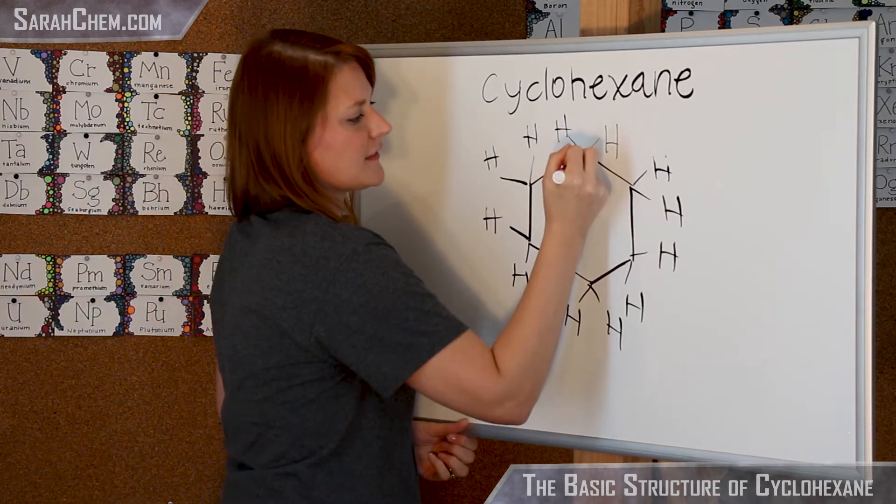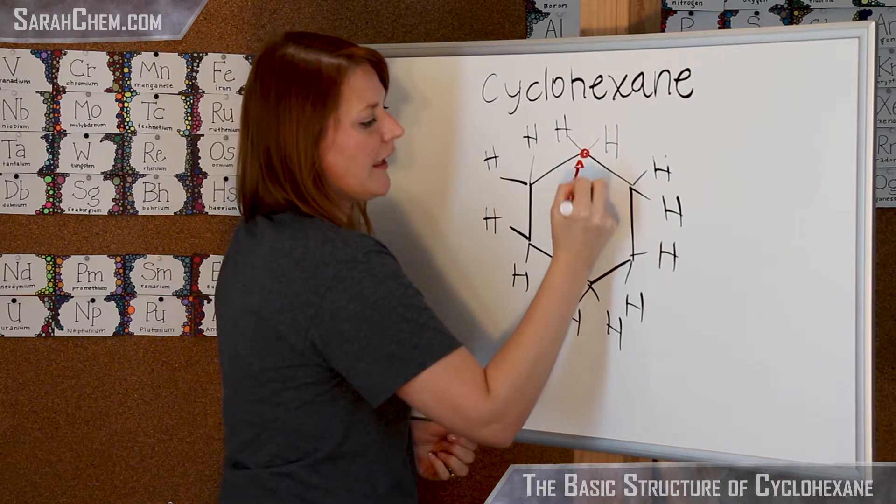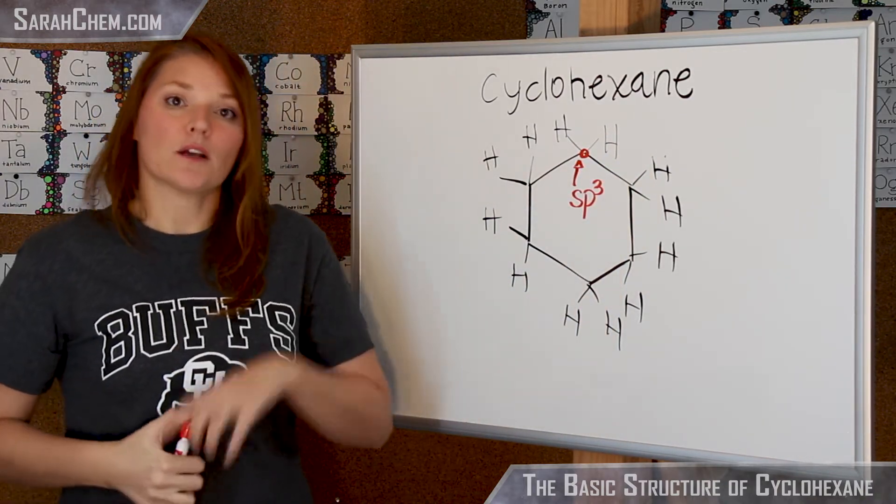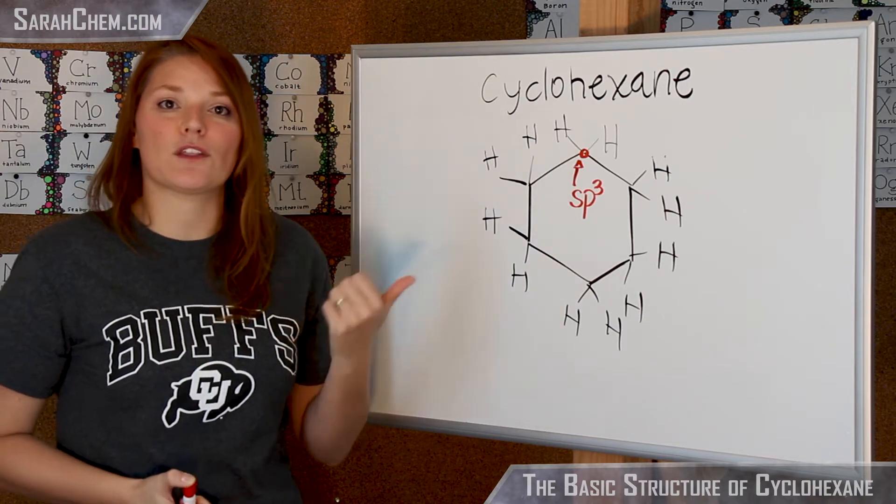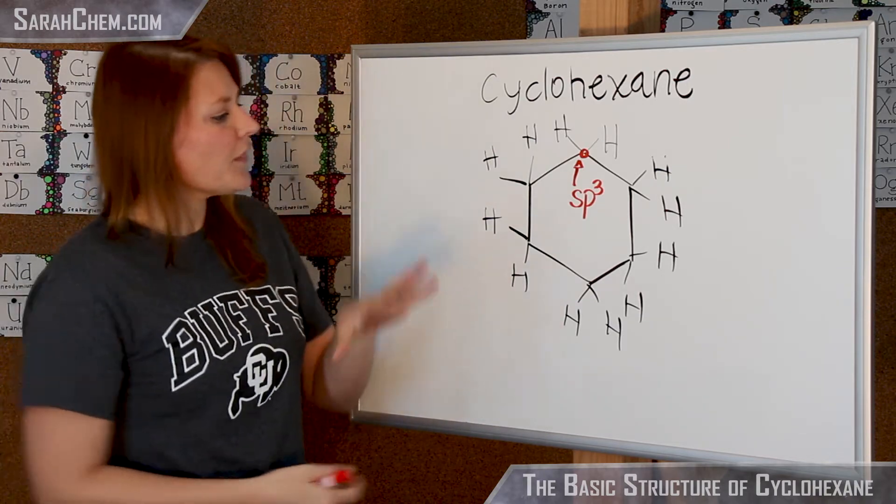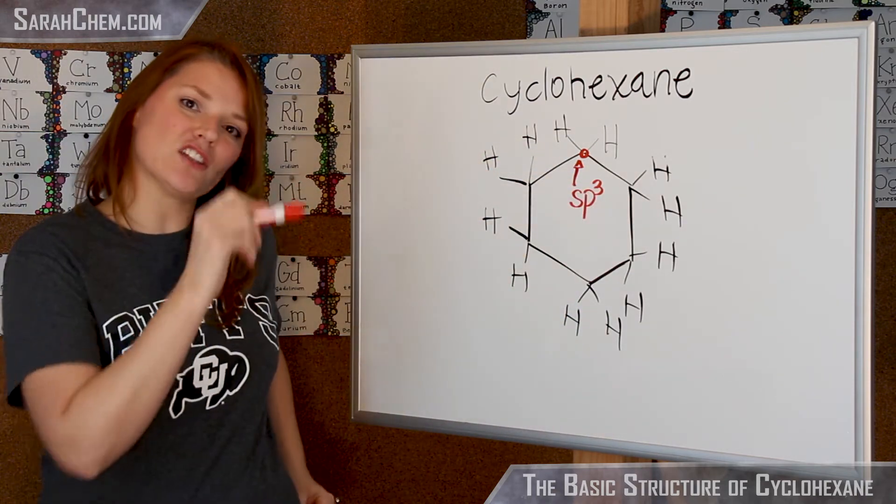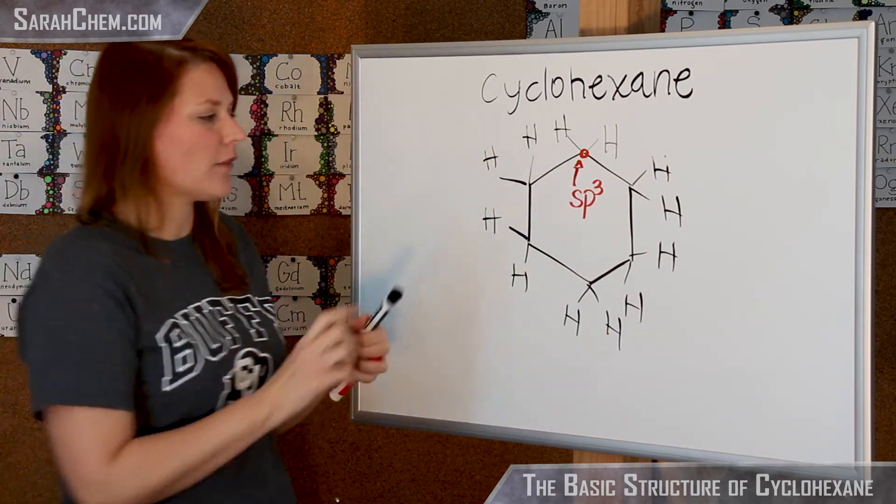One way to convince yourself of that is to take a look at this carbon. If you look at its hybridization, it's sp3 hybridized. Remember the shape associated with sp3 is tetrahedral. So what that would mean is if you took this and rotated it and gave it a flat appearance, it would actually have a zigzag topology.